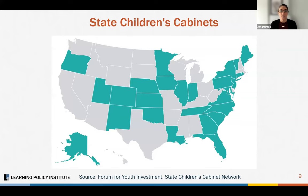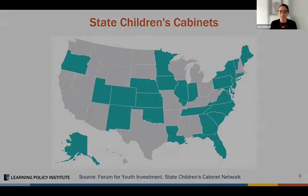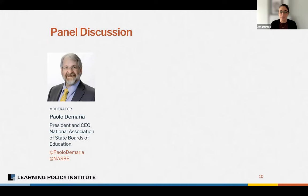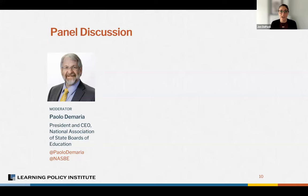To better understand how states are working to set a whole-child vision, we have an amazing panel. Our moderator is Paolo de Maria, President and CEO of the National Association of State Boards of Education. He recently retired as Ohio's State Superintendent of Public Instruction after five years of service, during which his proudest accomplishment was the collaborative development of the Each Child Our Future strategic plan. During his tenure, DeMaria focused on improving literacy outcomes, developing a whole-child framework, supporting teacher excellence and leadership, and promoting career technical education.